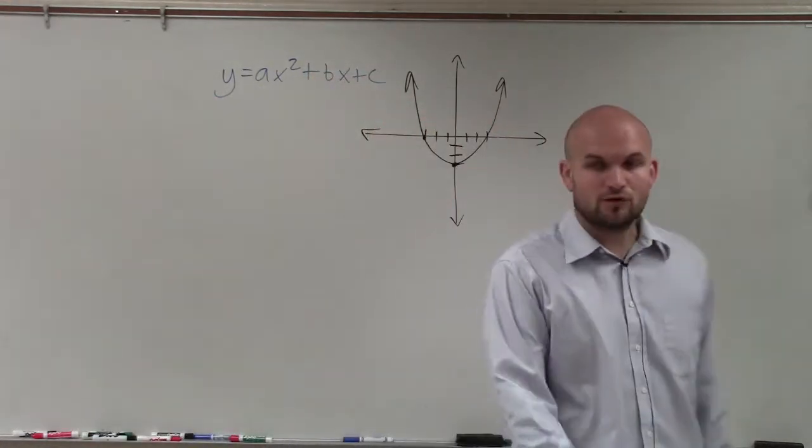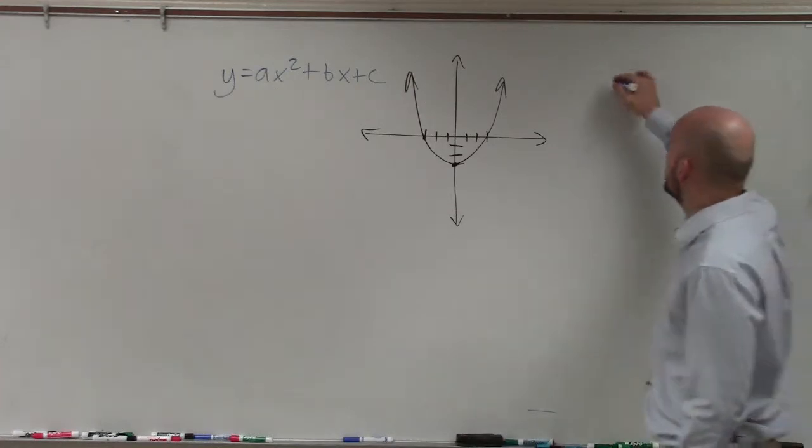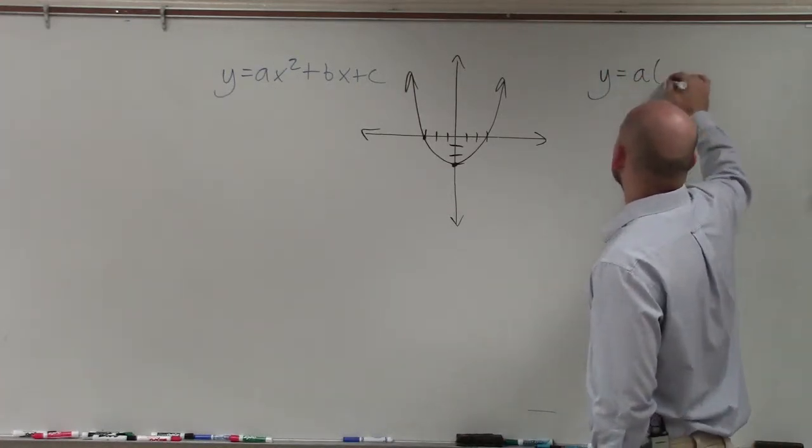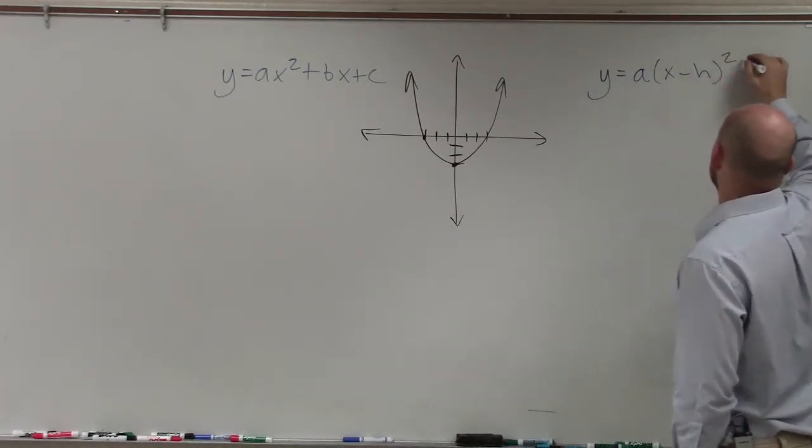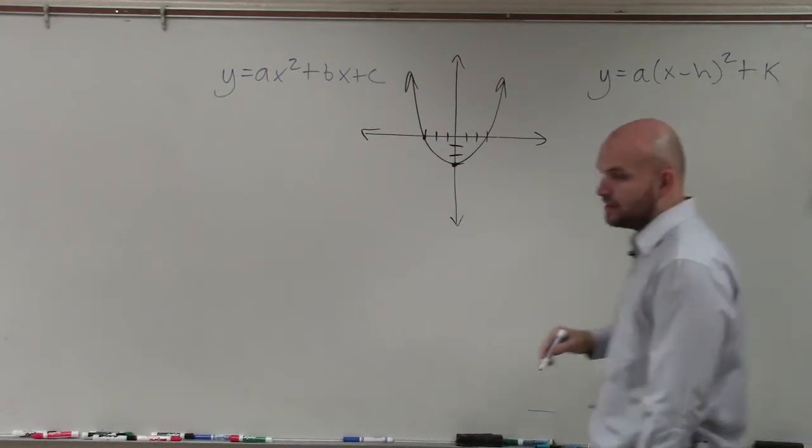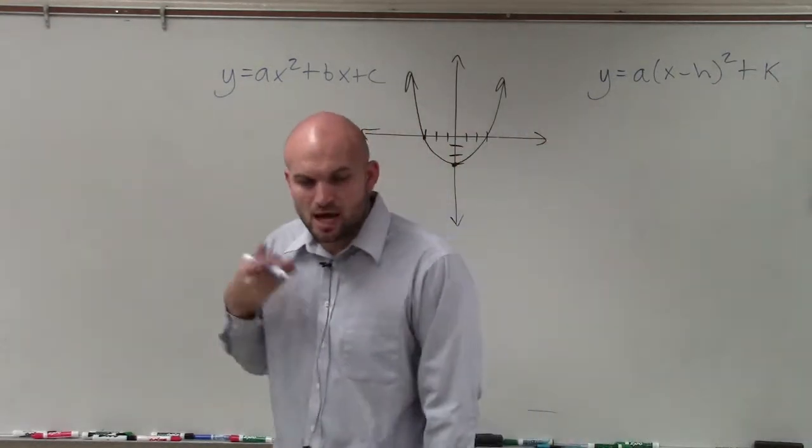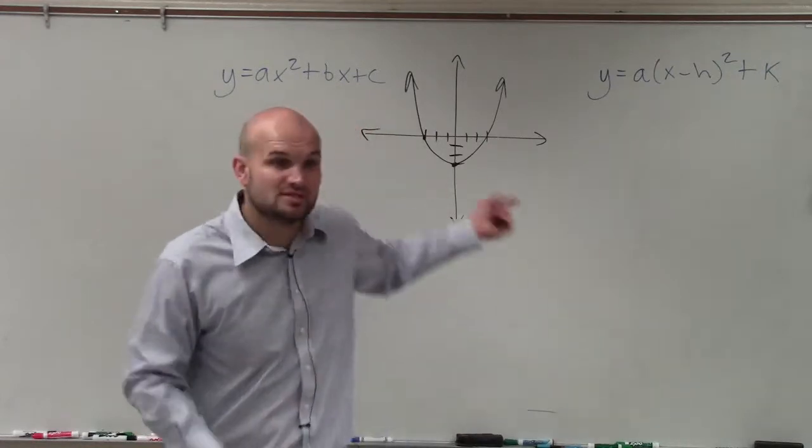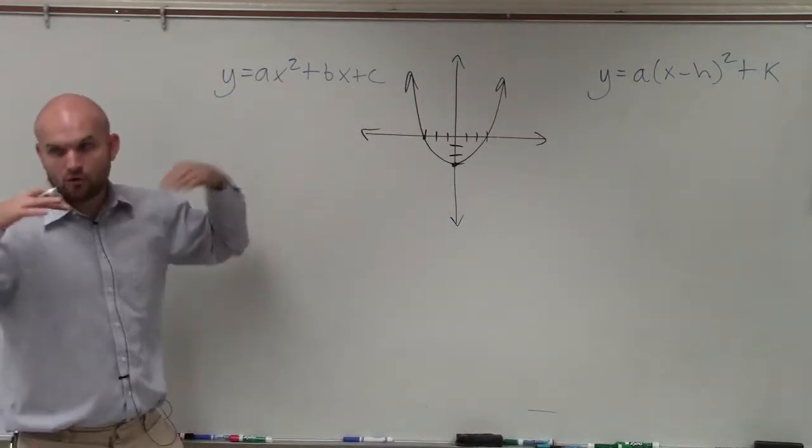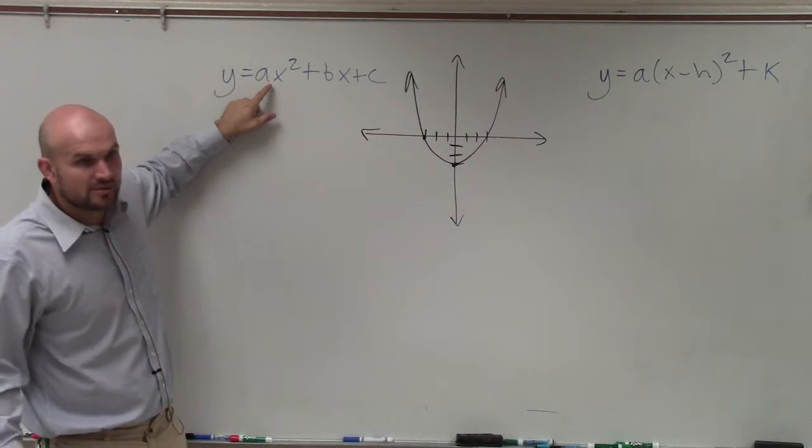And then the other formula that you went over extensively in Algebra 2 was what we call vertex form: y equals a times x minus h squared plus k. Now, what was helpful about both these forms, at least in standard form, we were able to determine if the graph opened up or down based on the value of a. Do you guys remember that?